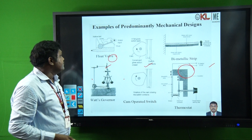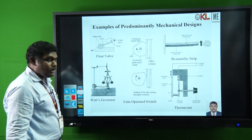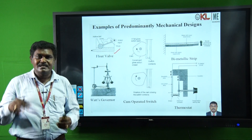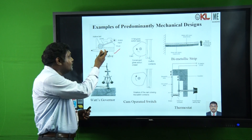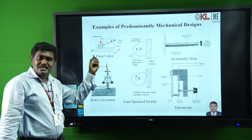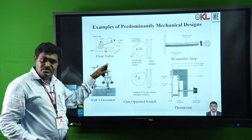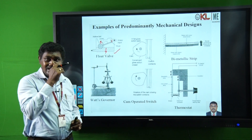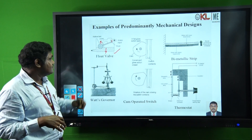Now see some examples of predominantly mechanical designs. One example is the float valve — everybody knows this. We are maintaining the level of liquid water in a tank. At a certain desired level, the float moves up with the water, and once it moves up, the valve is closed and water stops flowing inside the tank. Whenever the water level comes down, the float valve opens again and liquid water flows inside the tank. That is the best example of controlling the level of fluid using a float valve.